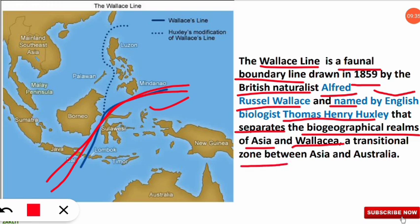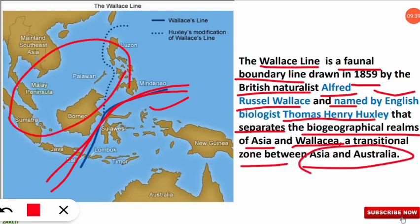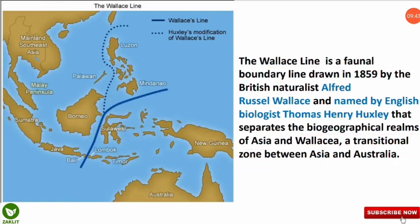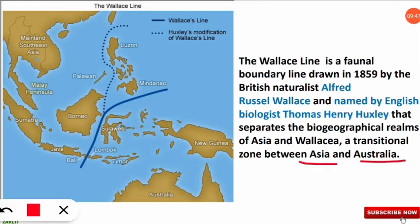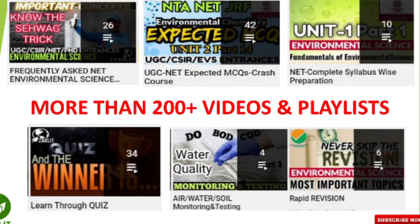The Wallace Line separates the biogeographical realms of Asia and Wallacea, serving as the transition zone between Asia and Australia. On the map, this boundary line divides Asia from Australia — that is, Asia and Wallacea, which is itself one of the biogeographical realms under a different classification. It is important to note that the Wallace Line divides Australia from Asia.